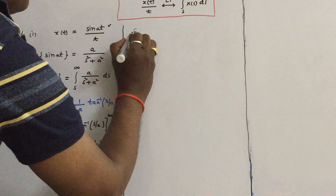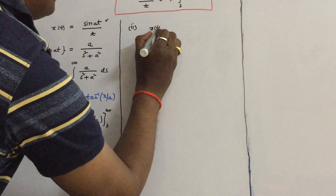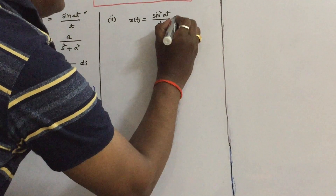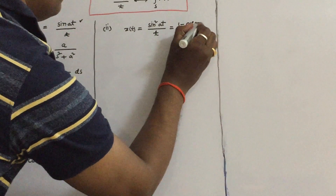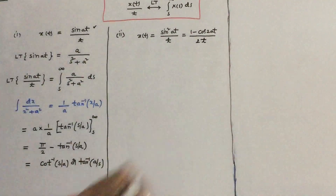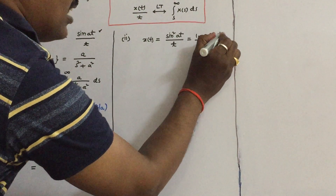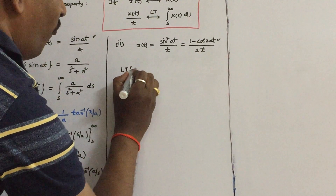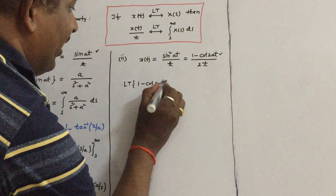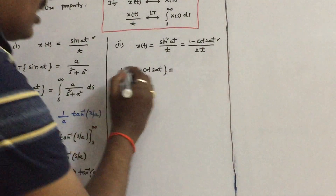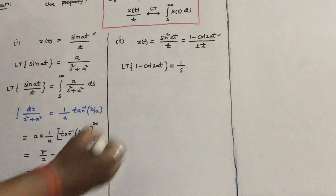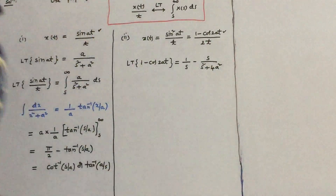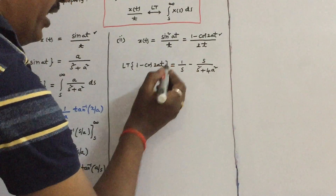Let us see the next problem, number 2. X(T) is given as sin²(At) by T. First, write the numerator as (1 minus cos(2At)) by 2T using the identity. Find the Laplace transform of 1 minus cos(2At): the Laplace transform of 1 is 1/S, minus the Laplace transform of cos(2At) which is S by (S² + 4A²).